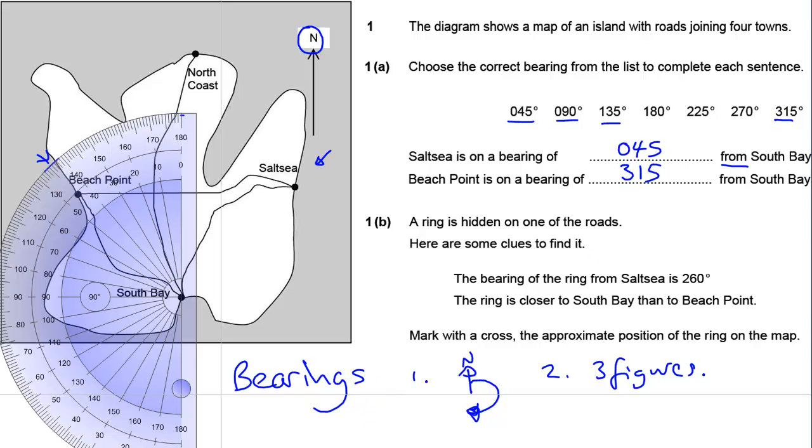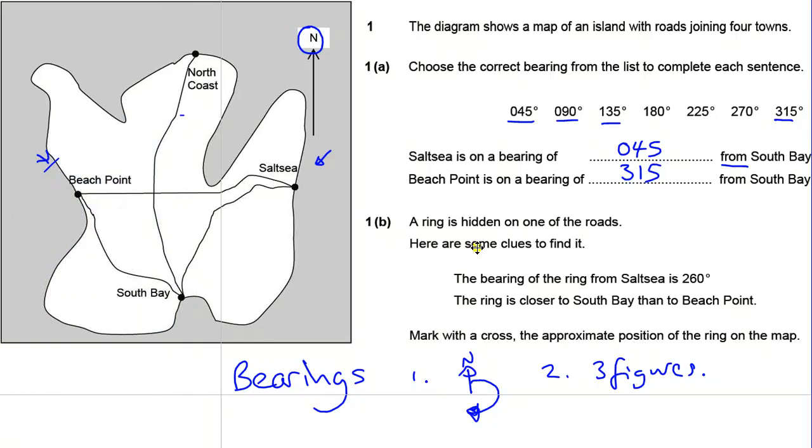Okay, part B of this question. A ring is hidden on one of the roads, so it has to be on one of these roads. Here are some clues to find it: the bearing of the ring from Saltcea is 260 degrees. The ring is closer to South Bay than Beach Point. So a bearing of 260 is our main clue, so we need to get our protractor out.